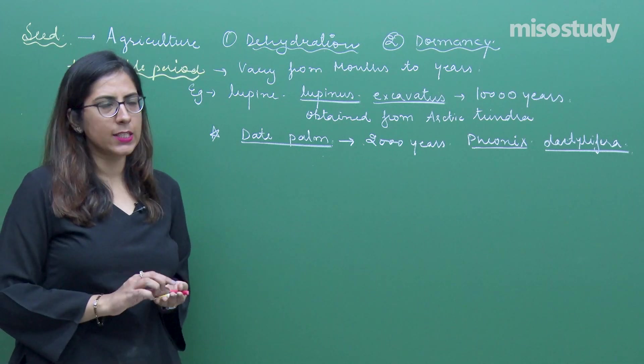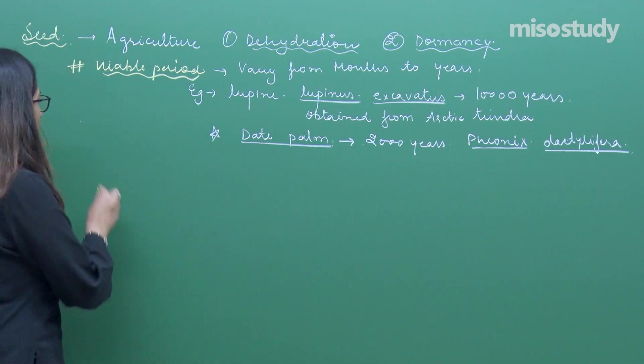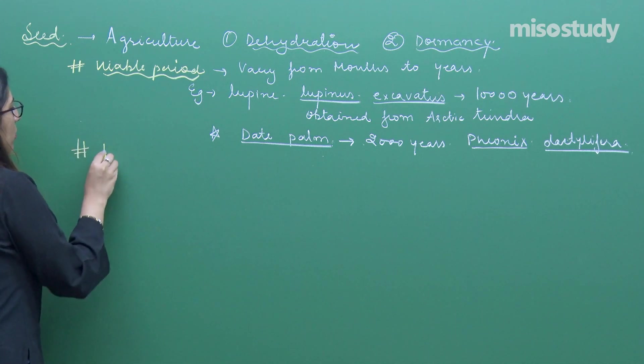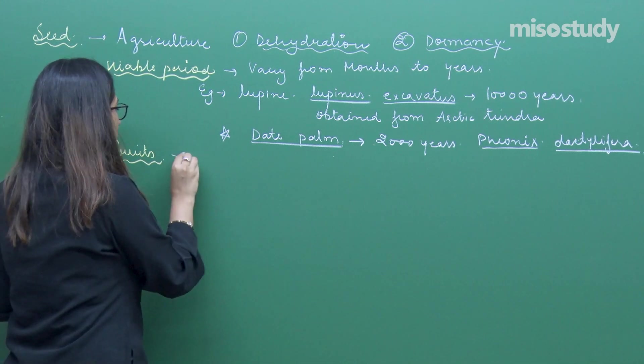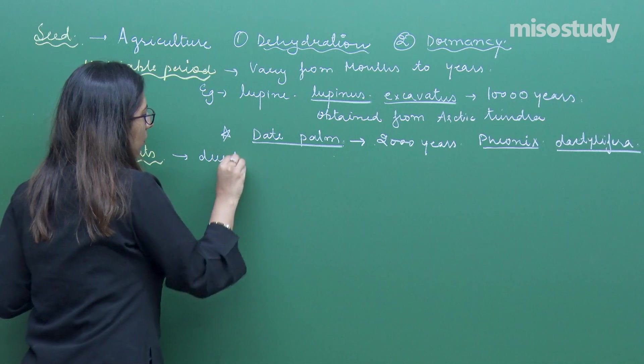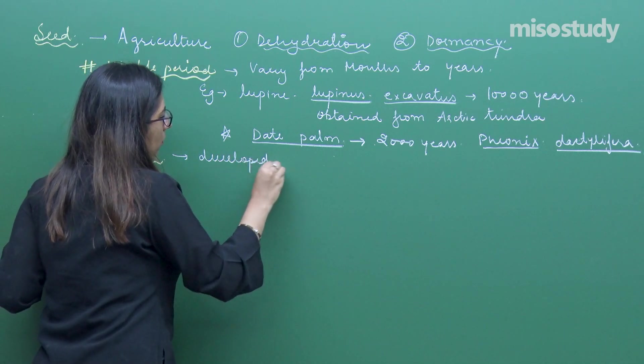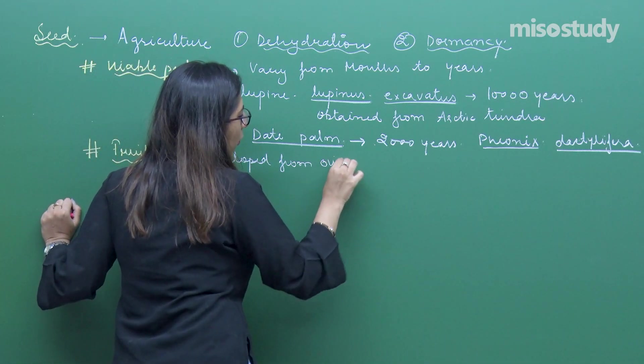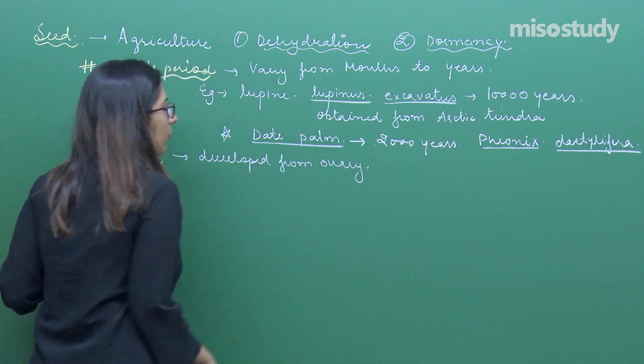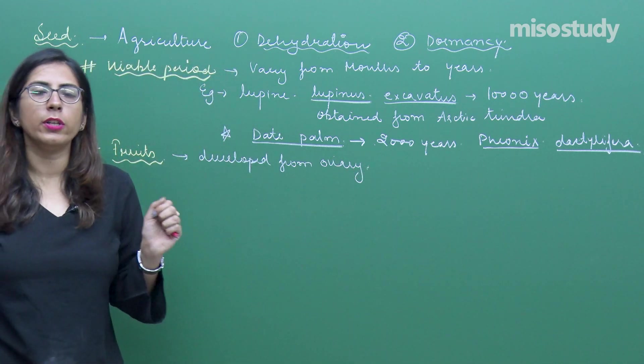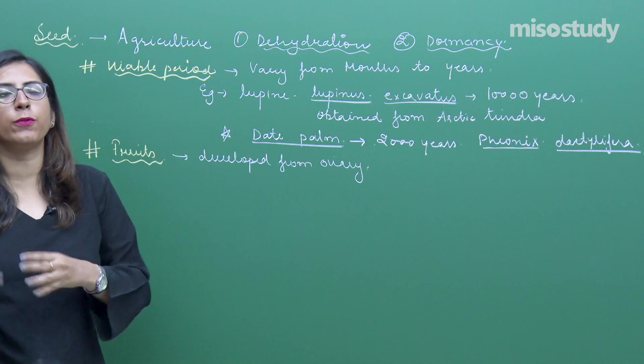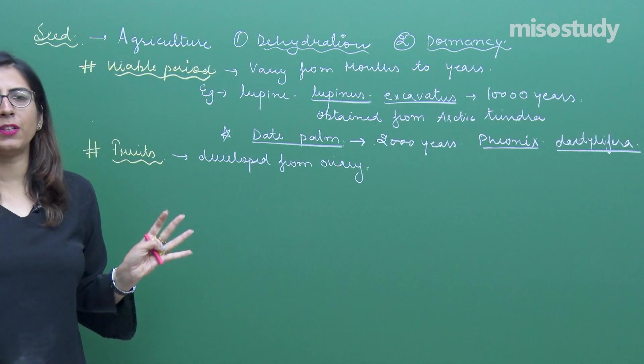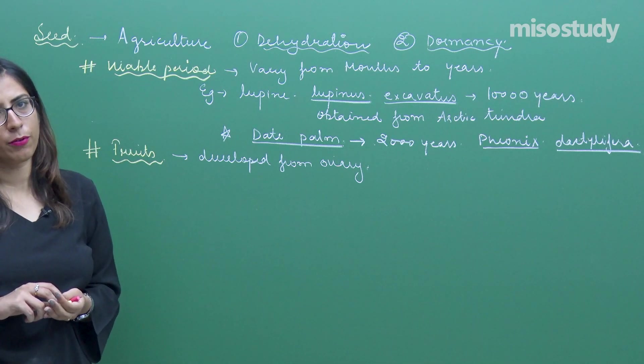Now let's talk about the next topic which is fruits. Fruits we all know are developed from ovary. Depending upon the seed, when actually this fruit development occurs - once seed development is completed, after that there is formation of fruit.